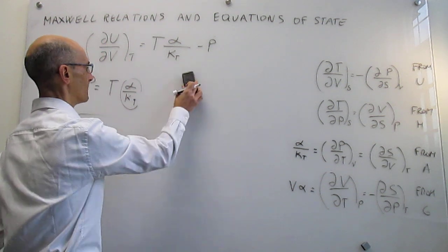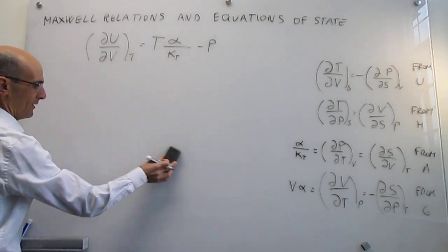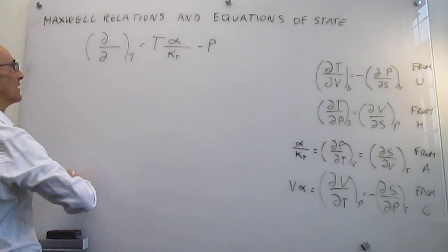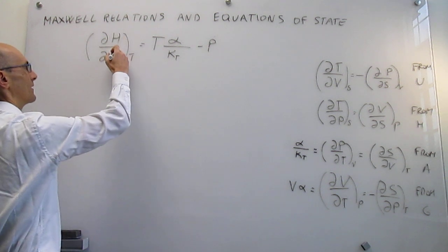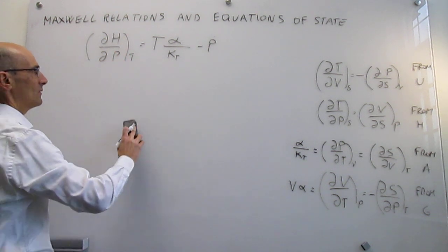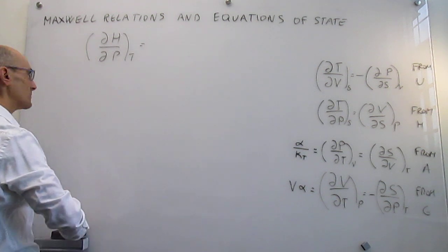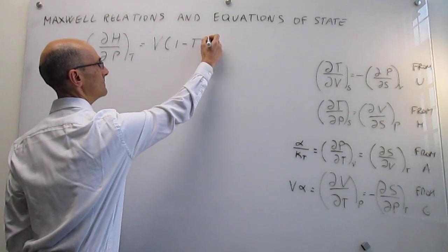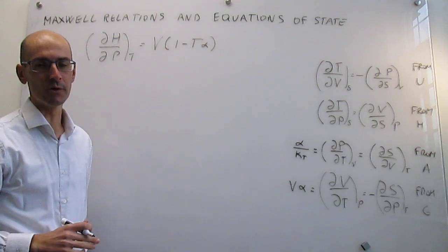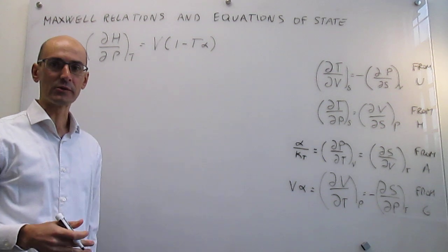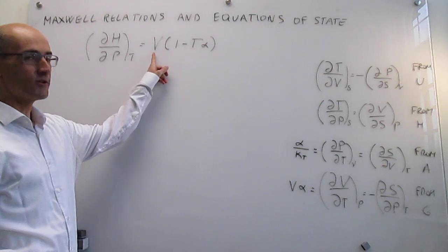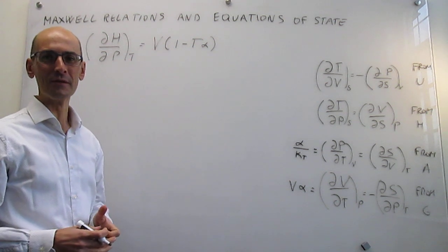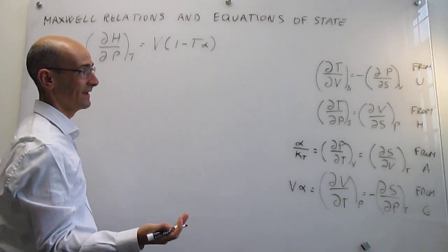If we now go back to the partial derivative of the enthalpy with respect to pressure and recover the expression derived in a prior video, we saw that this was equal to V(1 − Tα). Notice that here you actually have the volume, and we can solve for it — that will be our equation of state where we can easily calculate the volume of any substance.